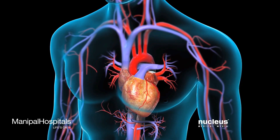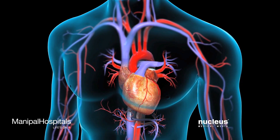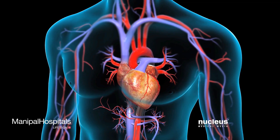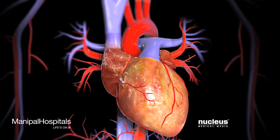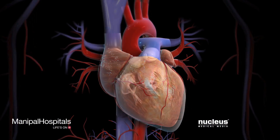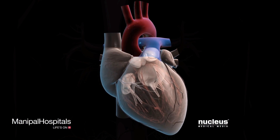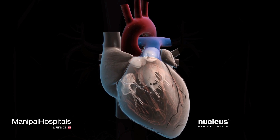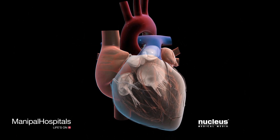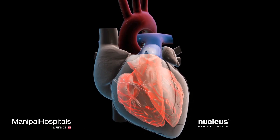Your surgeon will perform an aortic valve replacement if your aortic valve is not functioning properly. The heart is a muscular organ that pumps blood through the body. It consists of four chambers: the upper chambers are the right and left atria, and the lower chambers are the right and left ventricles.